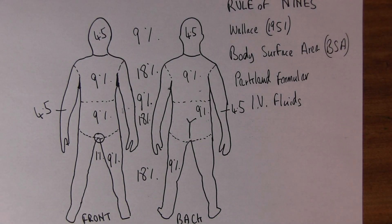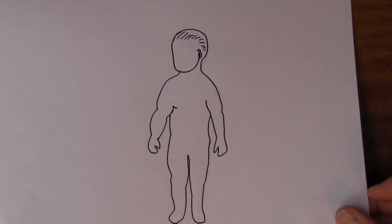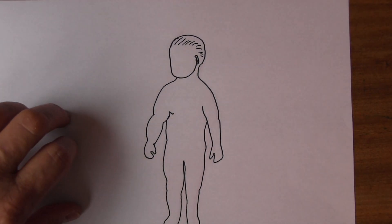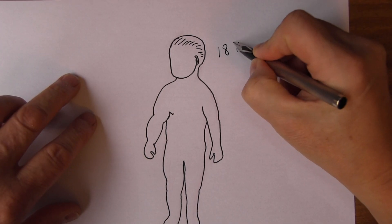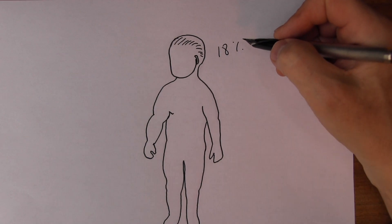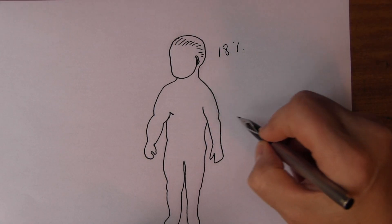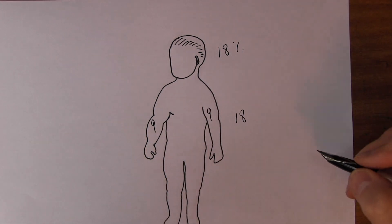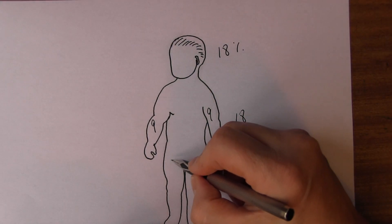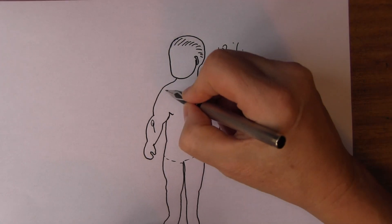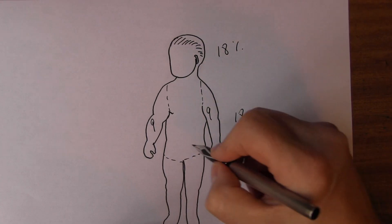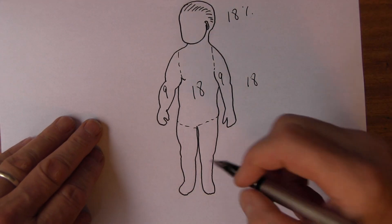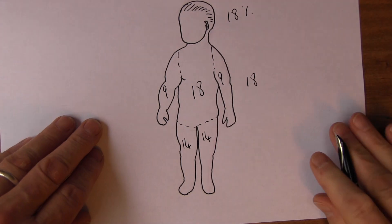It's slightly different with children — it depends on the size of the child, and there are specialised paediatric charts for working this out. But basically children have got bigger heads, so roughly 18% for the head in a child — that's 9% for the front and 9% for the back. The torso is still 18%. The arms in children count as 9% each, so 4.5% for the front and 4.5% for the back. And the legs in a child count as 14% each as an approximation.